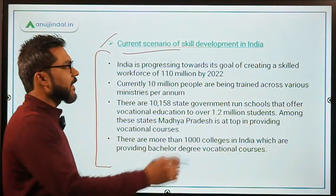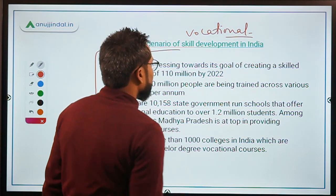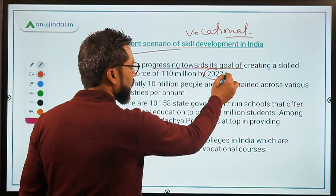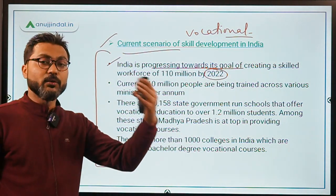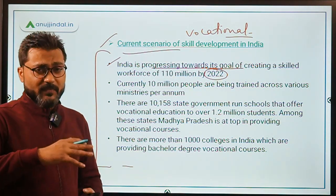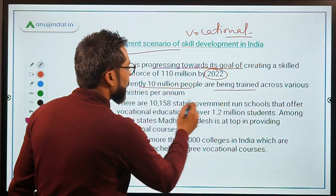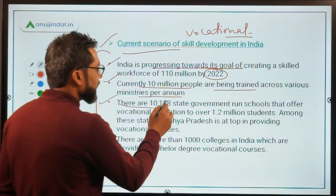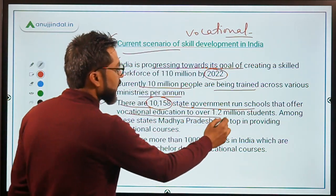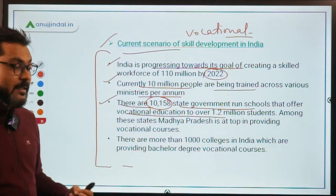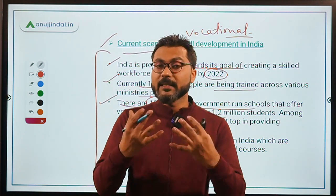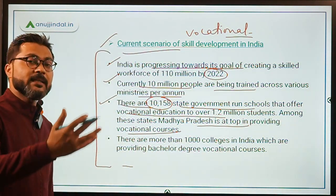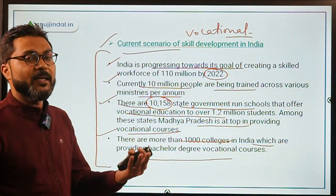The report outlines the current scenario of vocational education in India. India is progressing towards its goal of creating a skilled workforce of more than 110 million by 2020, with 10 million people being trained across various ministries per annum. There are 10,158 state government-run schools offering vocational education to over 1.2 million students, and more than 1,000 colleges providing bachelor's degrees in vocational courses.